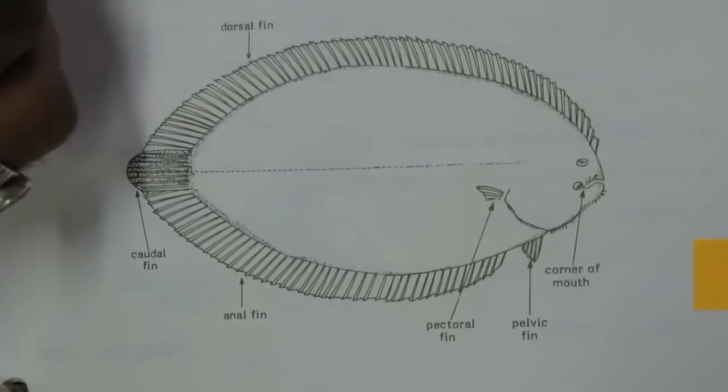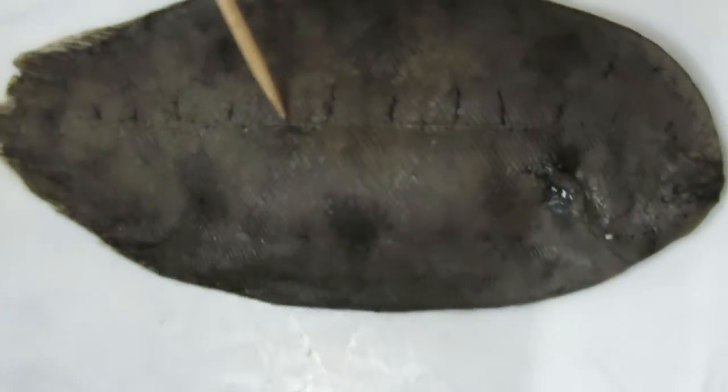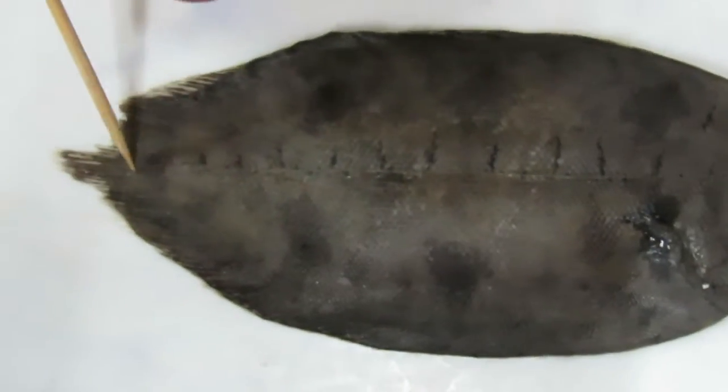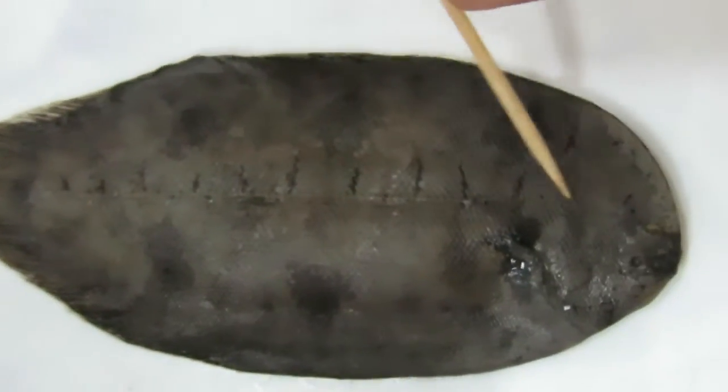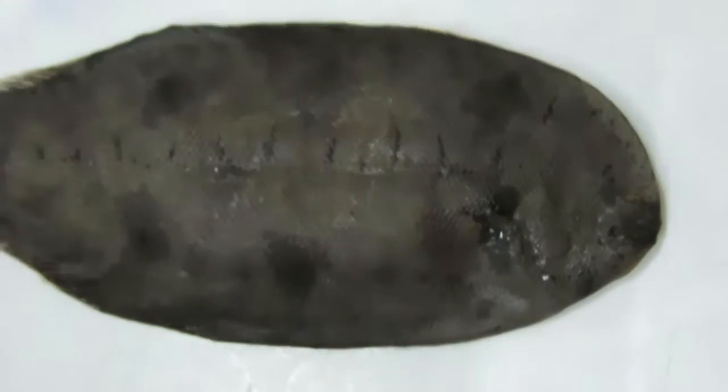Next family is Soleidae. We have a specimen of Soleidae. The lateral line is single and straight on the body, but sometimes branched on the head.